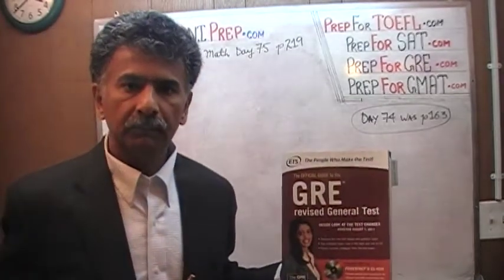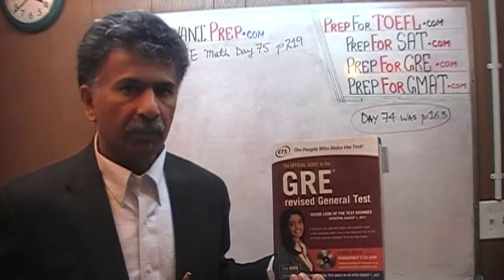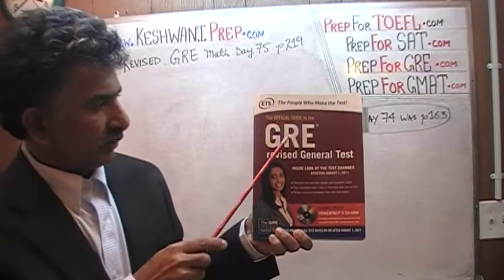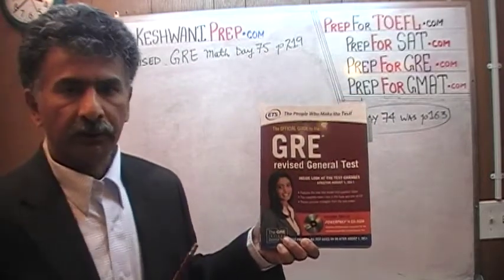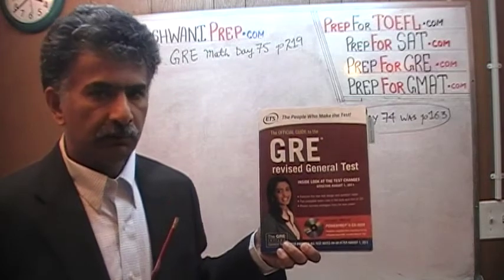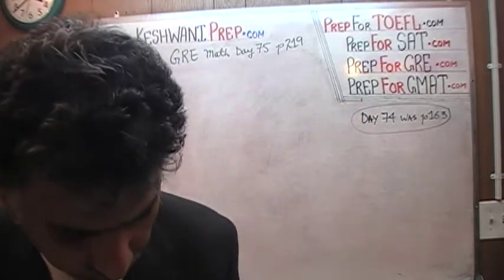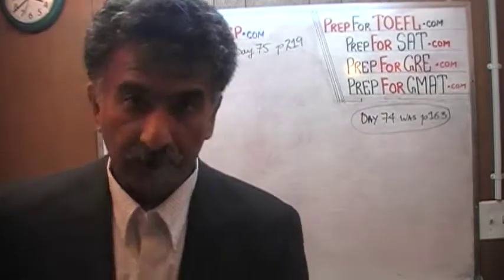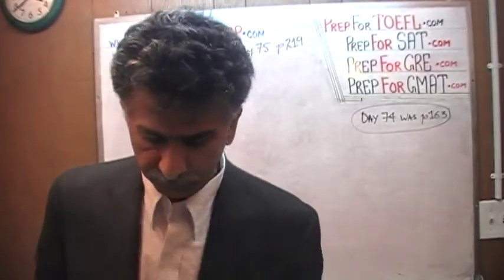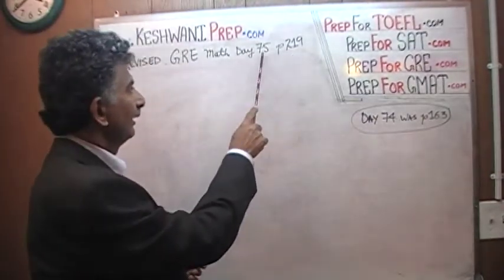We are here because we want to prepare for the GRE. We have been solving GRE math problems out of this book here — the official guide to the GRE, the revised general test. If you do not own this book already, purchase it immediately. You are going to need it. The problems that we are about to solve are the ones that you are going to find on page number 219. Today is our lesson number 75.